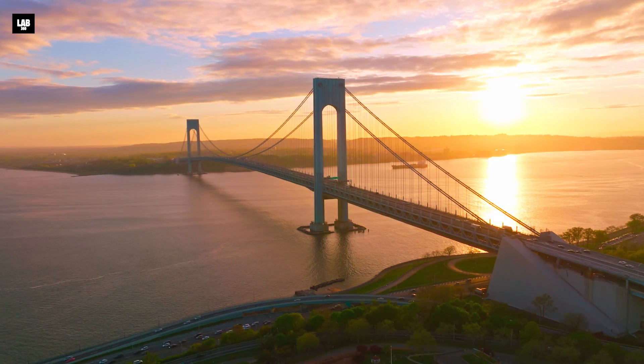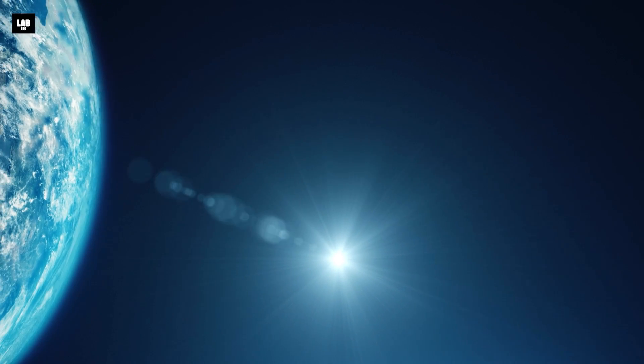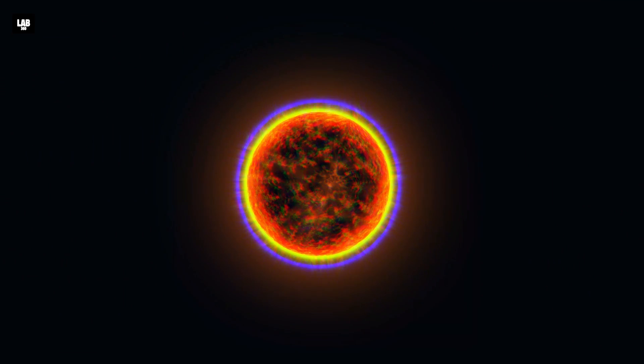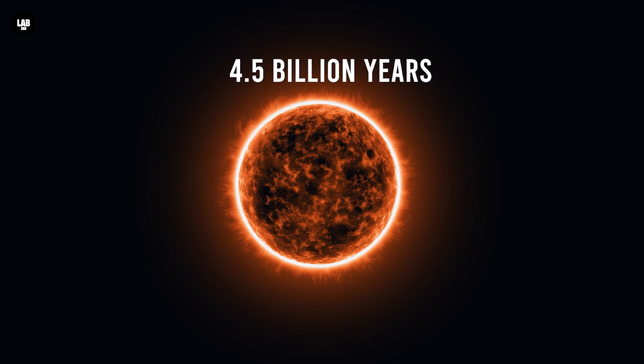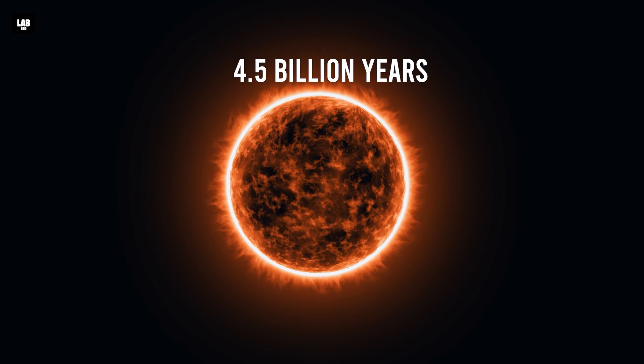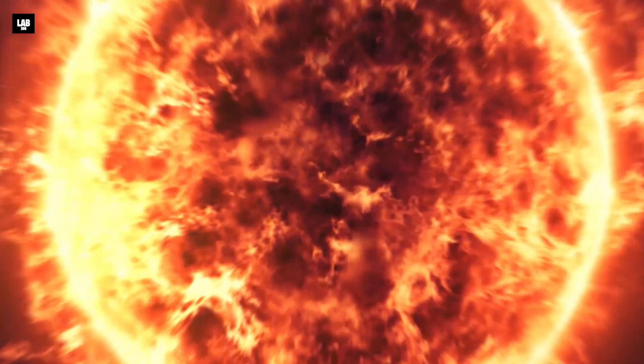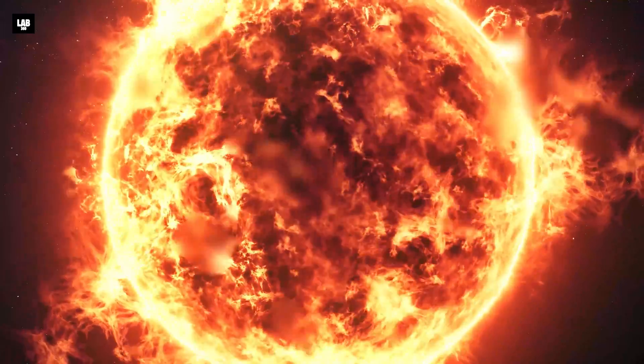We've become so used to the sun rising and setting daily that we probably don't spare a thought about what will happen to our sun in the future. Our sun has existed for 4.5 billion years now, but will it remain like this forever? Is there a possibility that our sun will someday die?